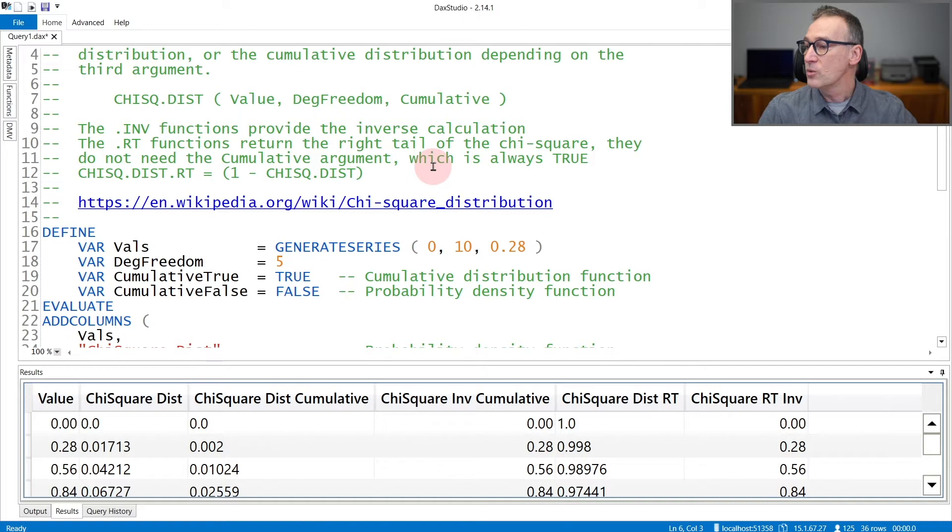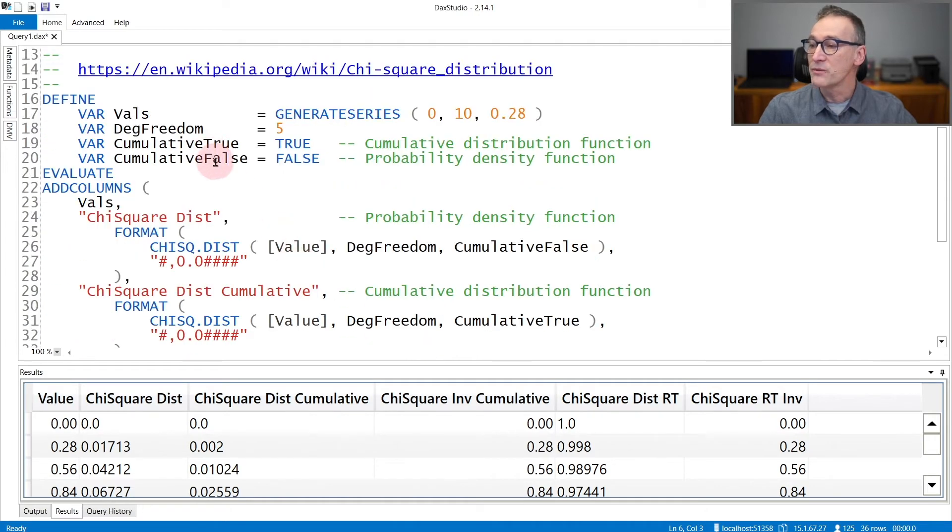In this example, what I did is I created a variable containing values from 0 to 10 with 0.28 of step. I use a fixed value for the degree of freedom, five, and then cumulative true and false are useful only for readability of the further code.